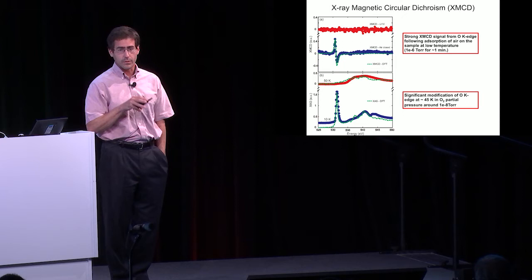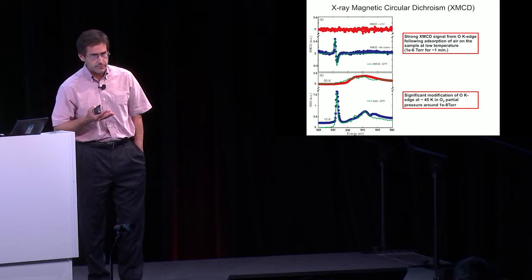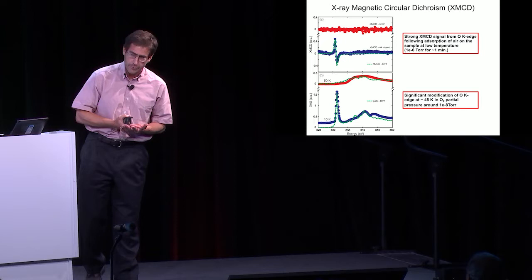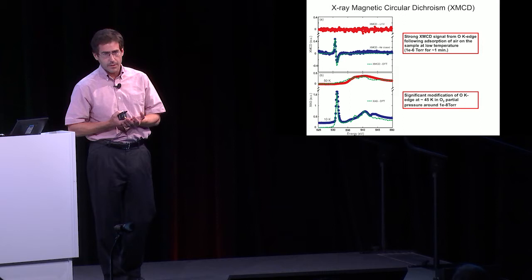We took aluminum and niobium films with various dielectric encapsulations, the same material stack used to make qubit circuits. We saw zero evidence of magnetism until we intentionally degraded the vacuum. When you introduce a tiny bit of air or molecular O2, suddenly you see a very strong XMCD signature at the oxygen K edge.